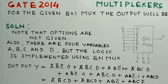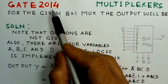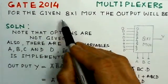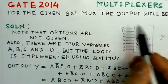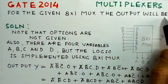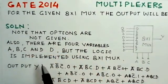This is the second problem on multiplexers from GATE 2014. We will read out the problem. For the given 8 to 1 multiplexer, the output will be—the options are not given and you have to determine what will be the corresponding output.